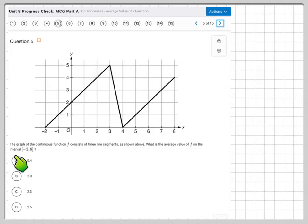Number five. Alright, so the graph of a continuous function f consists of three line segments as shown above. What is the average value of f on the interval from negative two to eight?